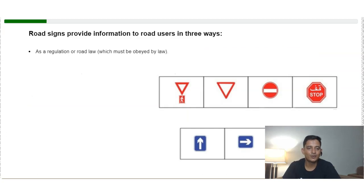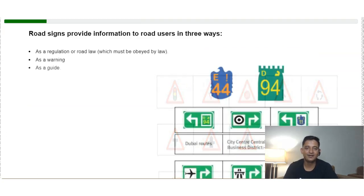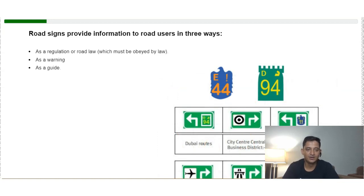Road signs provide information to road users in three different ways: as a regulation or road law, which must be obeyed by law; as a warning sign; or as a guide.